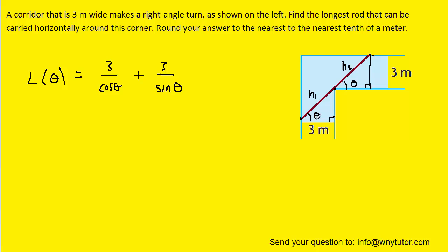We next want to note the domain of this function right here. We notice that theta has to be greater than 0 degrees. Because if it were 0 degrees, then this line segment that represents the rod would actually be laying horizontally in this fashion, and it would be infinitely long because it would extend forever down the corridor to the right.